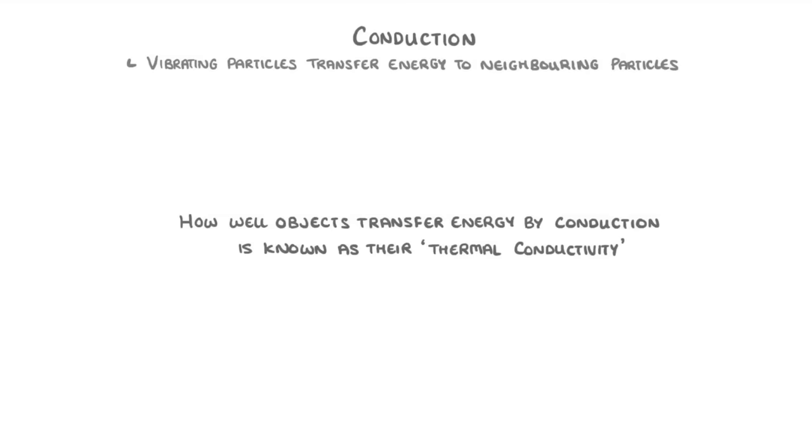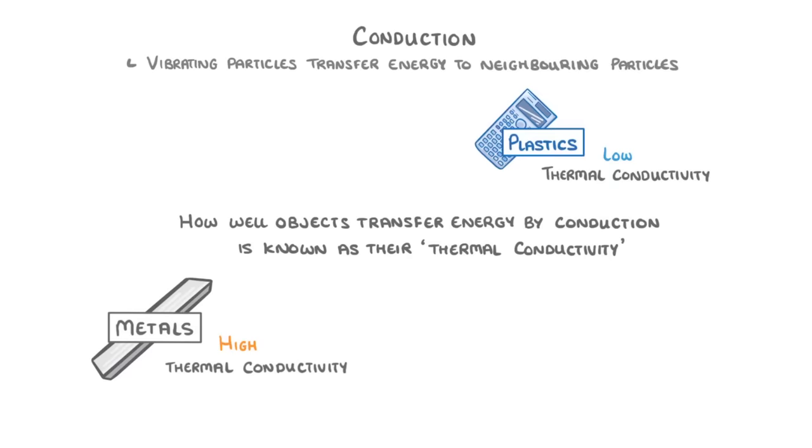Exactly how well objects transfer energy by conduction is known as their thermal conductivity. Metals have a high thermal conductivity and transfer heat energy rapidly. Whereas plastics have a low thermal conductivity, which is why we use them as insulators. And pretty much all fluids have a low thermal conductivity.